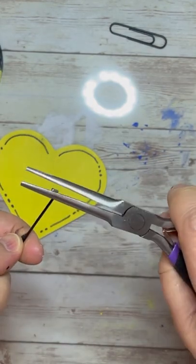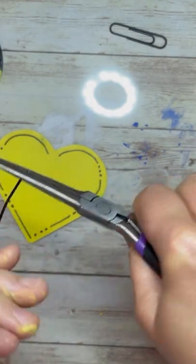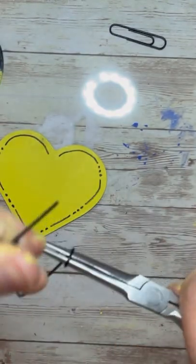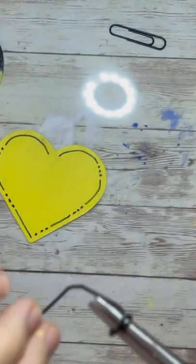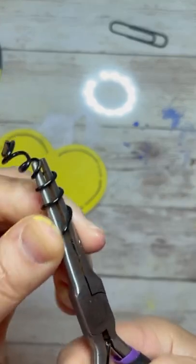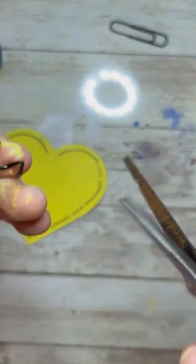And then I just, these happen to be a pair of pliers. You could use probably even scissors if you were really careful. And I just wrap it around. All I'm trying to do is make a little swirl with the paper clip. And that's what I did there.